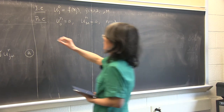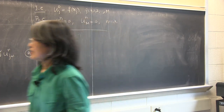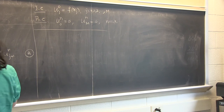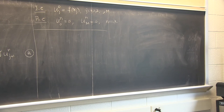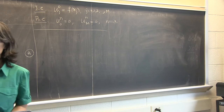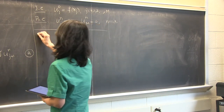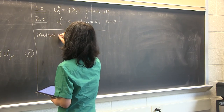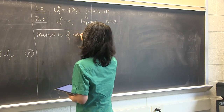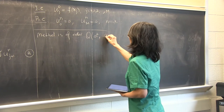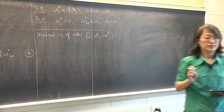We won't do full error analysis here, but intuitively: for the time derivative, I used a one-sided forward Euler step, which is a first-order approximation. For space, I have a second-order central finite difference approximation. So the combined method is first-order in time and second-order in space.